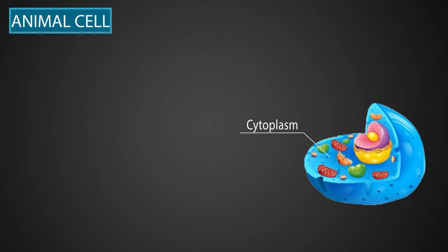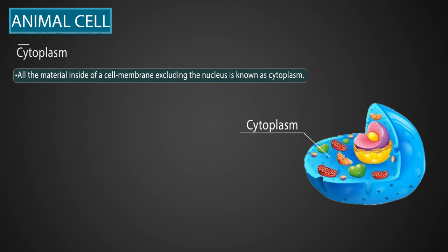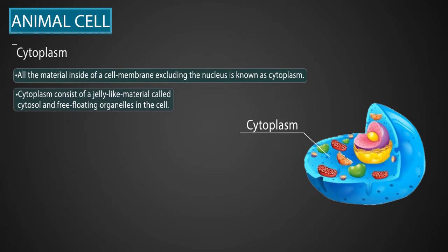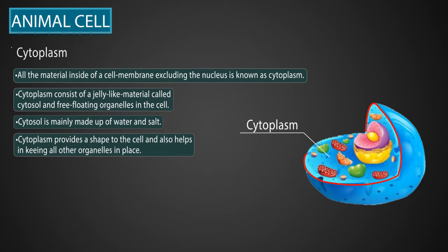Cytoplasm: All the material inside the cell membrane, excluding the nucleus, is known as cytoplasm. The cytoplasm consists of a jelly-like material called cytosol and free-floating organelles in the cell. Cytosol is a liquid material made up of water and salt. Cytoplasm provides shape to the cell and helps in keeping all other organelles in place.